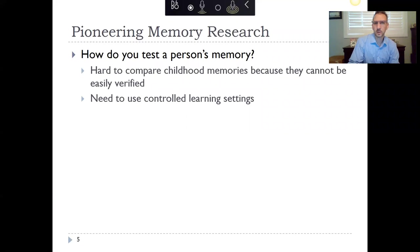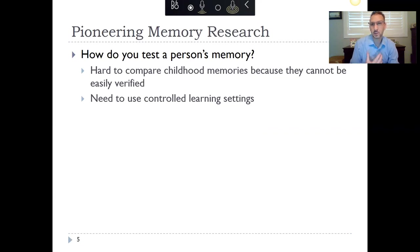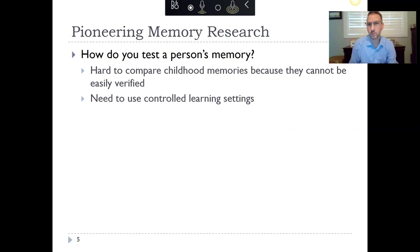It is difficult to test a person's memory. It's hard to compare childhood memories because you cannot easily verify them. If you ask people about their childhood experiences, a person may give vivid details that could potentially be inaccurate — they may be recalling things pulled from other sources, like movies they've seen or stories other people have told them. In researching memory, there's been an emphasis on doing this in controlled learning settings.